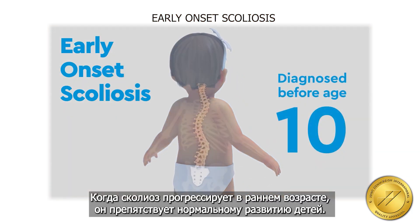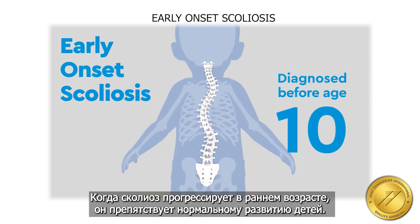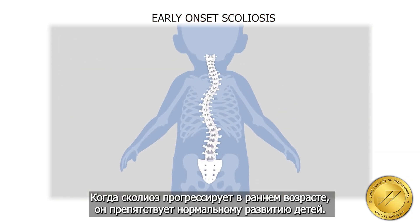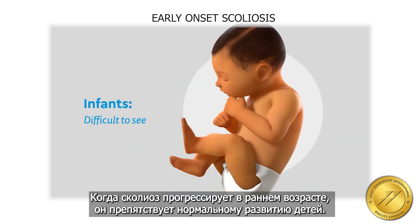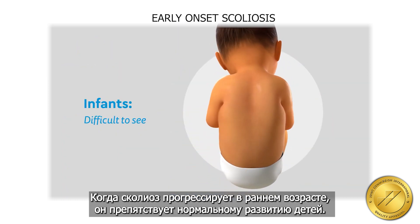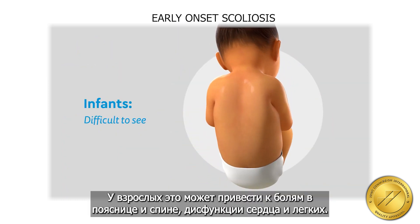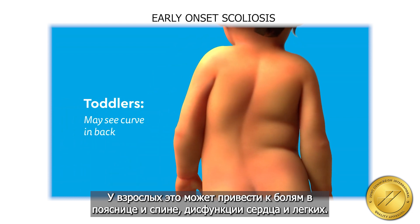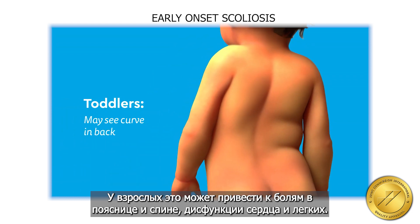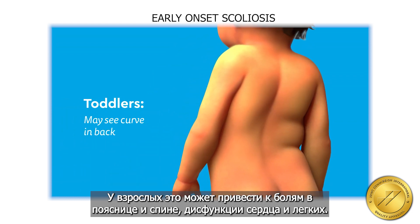Scoliosis which starts at an early age prevents the normal development of children when it progresses. In adults, it can lead to low back and back pain, as well as heart and lung dysfunctions.